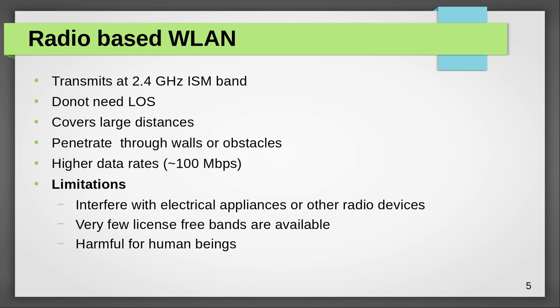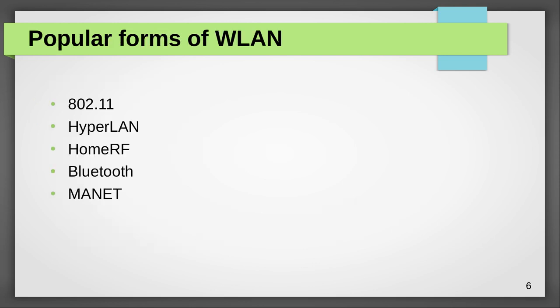Radio-based wireless LAN is not recommended for use in sensitive places like hospitals or where small children are present. Some popular forms of wireless LAN: the most popular is the 802.11 standard, that is Wi-Fi. Other than that we have HyperLAN, developed in Europe but not as popular; Home RF, used for connecting home appliances; and also Bluetooth and mobile ad-hoc networks.